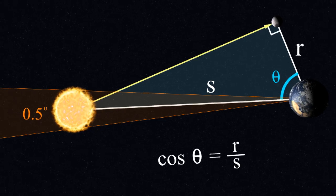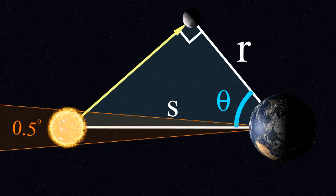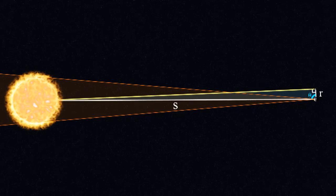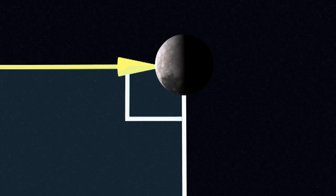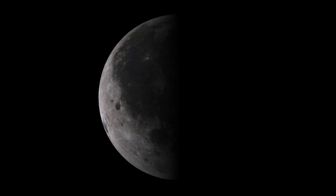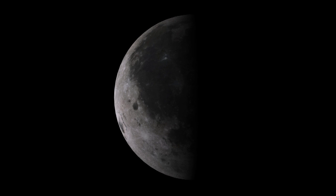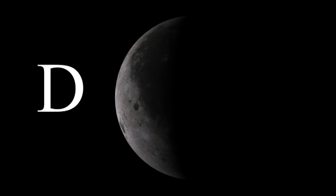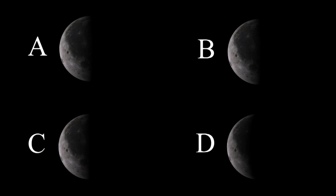By measuring the angle theta, we can find the size and distance to the sun, whether it's small and close or large and distant. The problem is it's very difficult to tell when the moon is exactly half full. See for yourself, is the moon half full now at time A or B or C or D? Each answer gives you a completely different size for the sun.